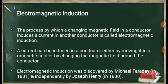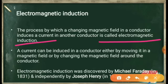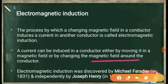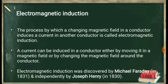Electromagnetic induction is the process by which a changing magnetic field in a conductor induces a current in another conductor. A current can be induced either by moving a conductor in a magnetic field or by changing the magnetic field around the conductor. Electromagnetic induction was discovered by Michael Faraday in 1831 and independently by Joseph Henry in 1830.